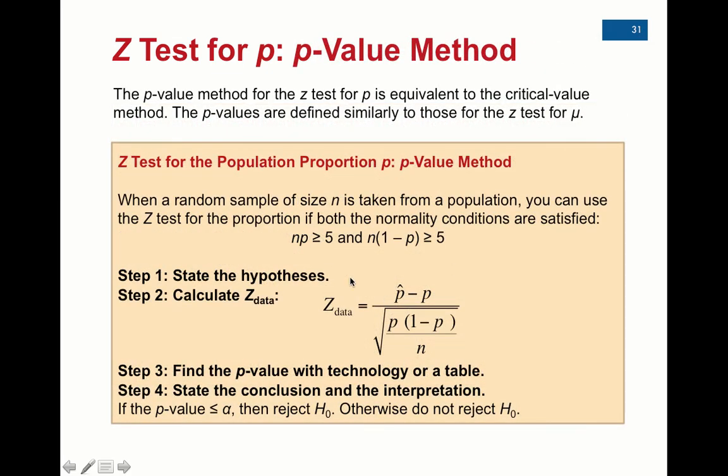This goes over the p-value approach. Everything's the same—the formula is the same—except that we don't look up z-crit. We just go from the hypothesis to calculating z-data, then we find the p-value with technology. We can use norm-cdf here. And then we remember the conclusion: if the p-value is less than alpha, then we can reject the null; otherwise, we do not reject the null.